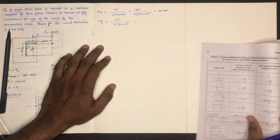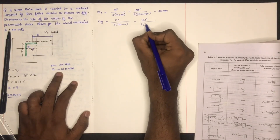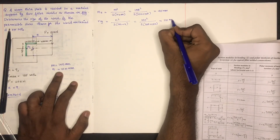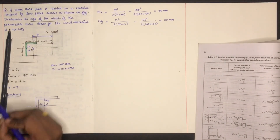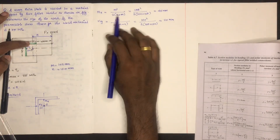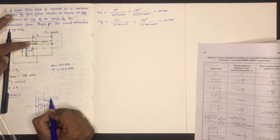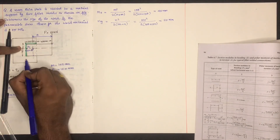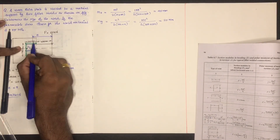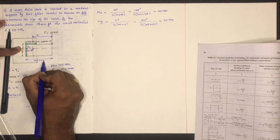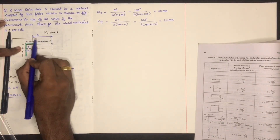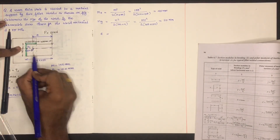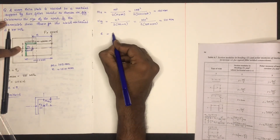Substituting: mx equals 150 squared divided by 2 into (100 plus 150), which gives mx = 45 mm. Then ny equals 100 squared divided by 2 into (150 plus 100), which gives ny = 20 mm. So mx = 45 mm and ny = 20 mm. This is the centroid location.